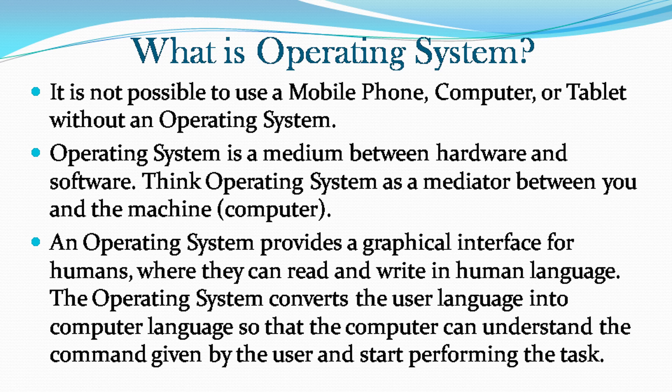What is an operating system? It is not possible to use a mobile phone, computer, or tablet without an operating system. An operating system is a medium between hardware and software. Think of the operating system as a mediator between you and the machine. An OS provides a graphical interface for humans, where they can read and write in human language. The OS converts the user language into computer language so that the computer can understand the command given by the user and start performing the task.